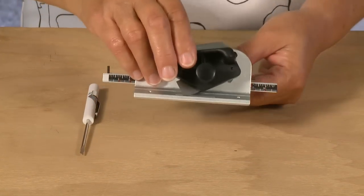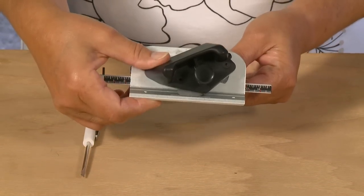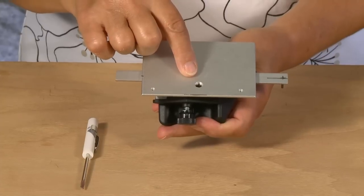To adjust the blade depth on the 4000 Deluxe Pulse Style Bevel Cutter, find the blade depth adjustment screw on the bottom of the cutting head.